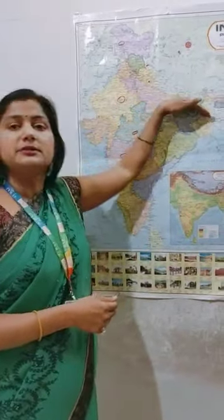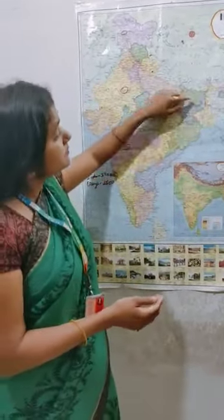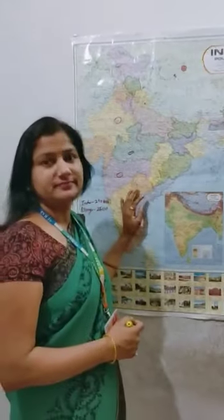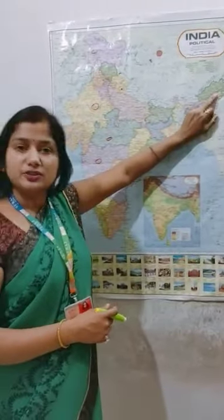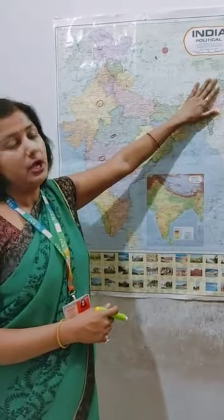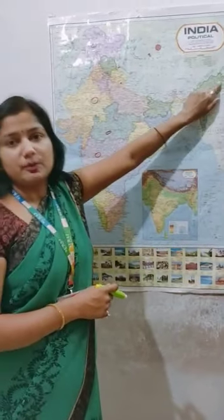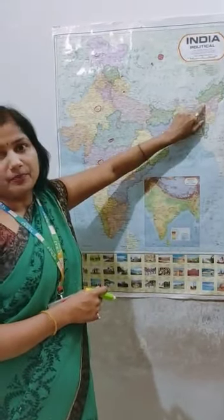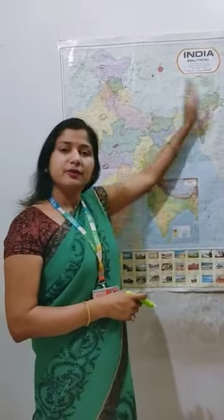River Ganga splits into two parts. When it enters West Bengal, its name is Hooghly. When it enters Bangladesh, its name is Ganga-Padma. The river Brahmaputra originates from Tibet, where its name is Tsangpo (T-S-A-N-G-P-O). It enters India through Arunachal Pradesh, flows through Assam, and drains into the Bay of Bengal.